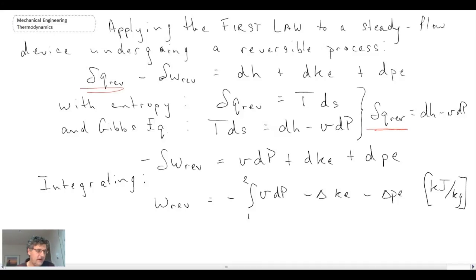So that provides us with an expression. What we're going to do now is neglect both the kinetic energy and the potential energy. So those two go away. And what we're left with, neglecting kinetic energy and potential energy, is the following relationship for reversible work.